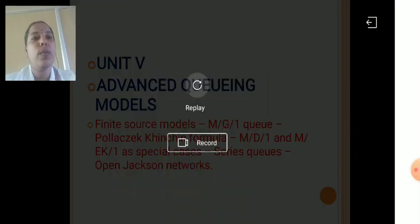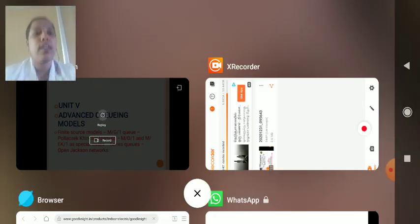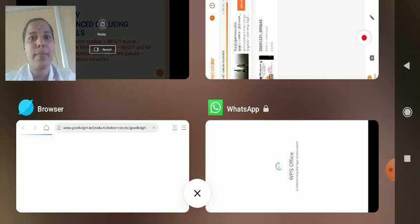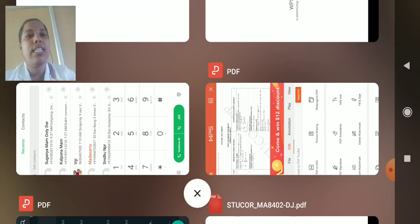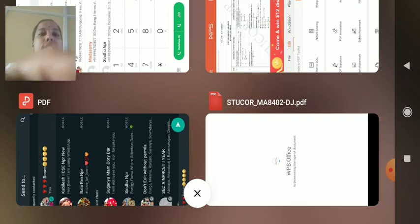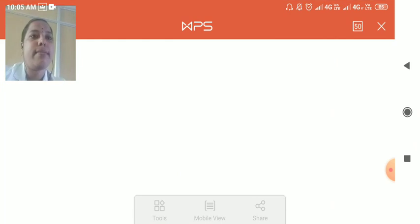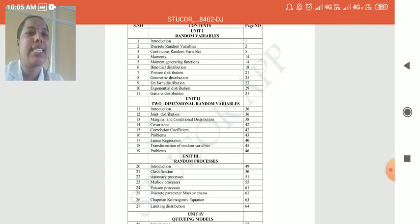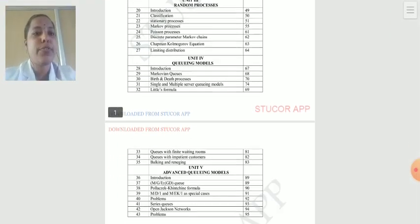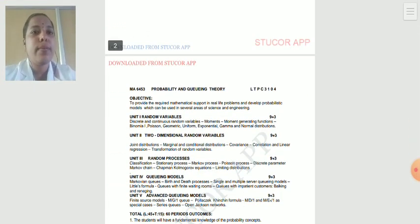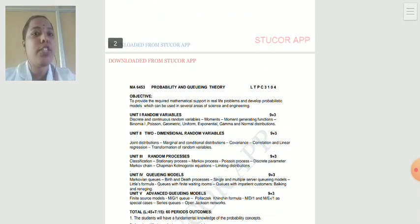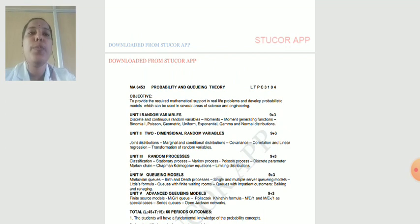So, you want to know the author of this. Author of this syllabus. That is, author of your book. Let me explain about the author of this book. Yes, these are the contents we are going to learn for the next four months. So, this is the objective of this PQT probability and queueing theory to provide the required mathematical support into real-life problems and develop probabilistic models which can be used in several areas of science and technology. So, this is the main objective of this syllabus.